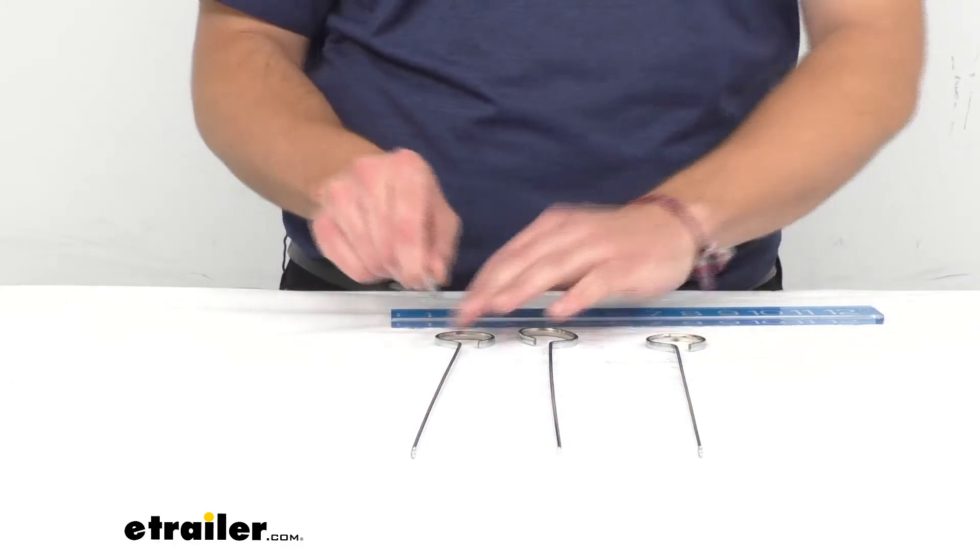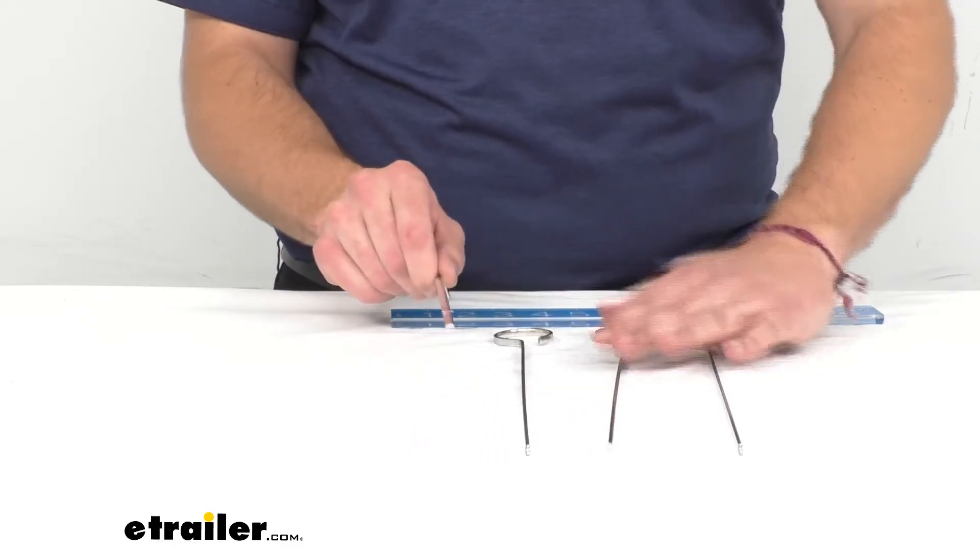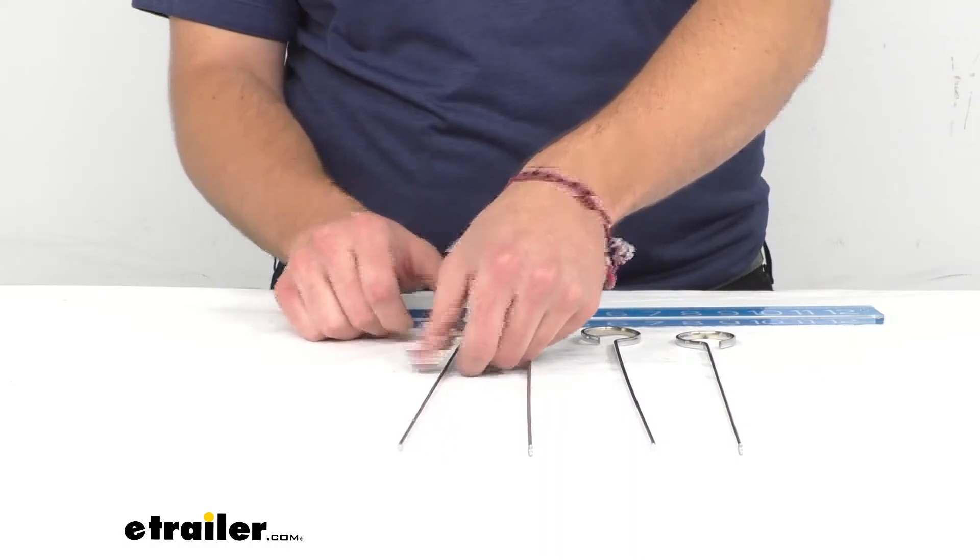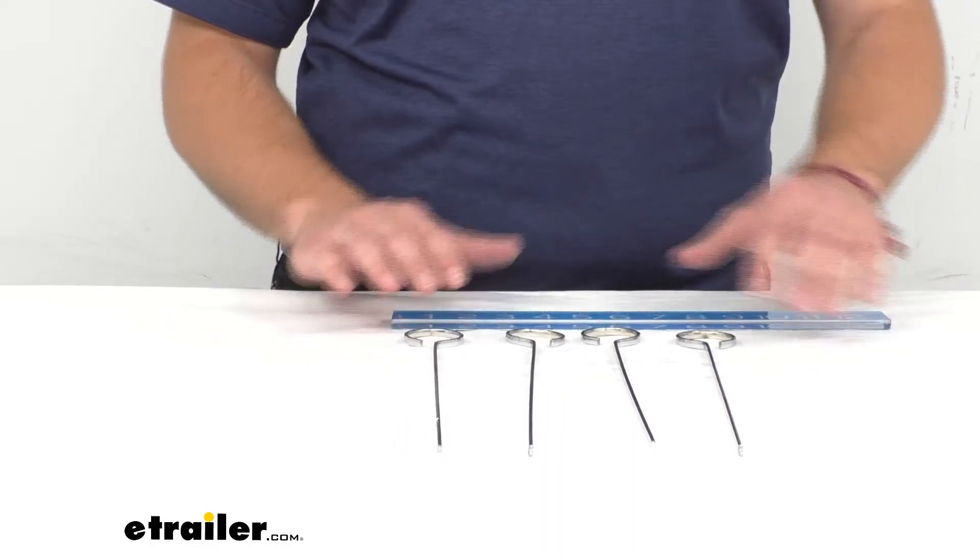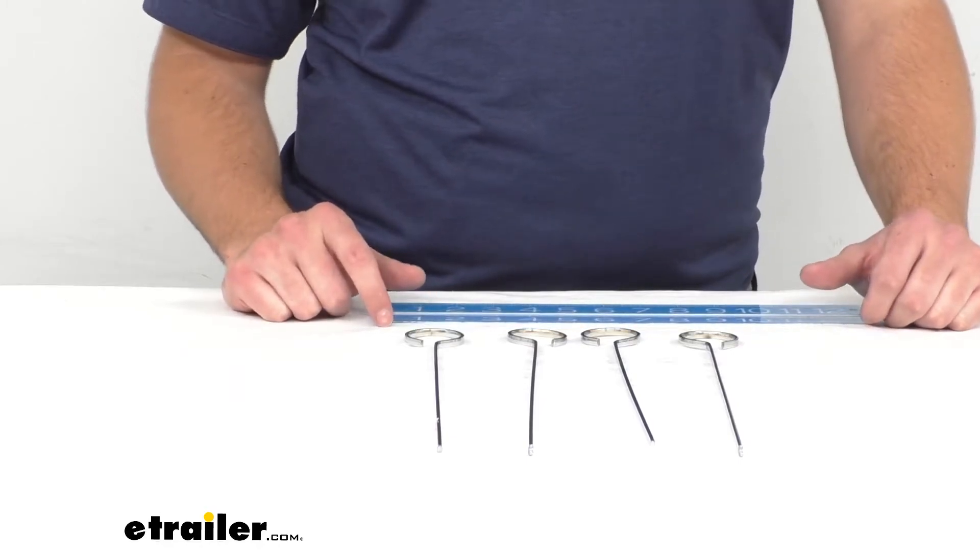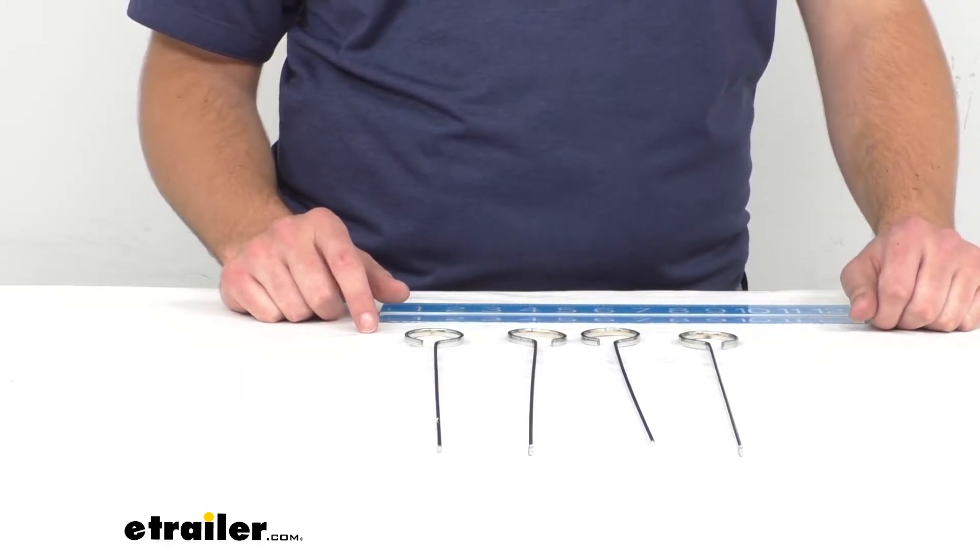We want to get a good, nice, even cook on all our veggies and our chicken, steak, whatever we have on here. I just think it's going to be a nice way of giving yourself a set of four as well, so that everyone in the family has a skewer ready to go.